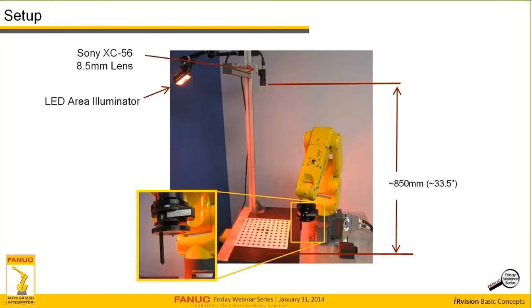Here's our setup in the FANUC conference room. I'm working with a Sony XC56, which is the standard resolution FANUC camera, using an 8.5mm lens to achieve the desired field of view at a standoff of about 850mm. I've set up a broad-area LED illuminator — not necessarily optimal for your application, but it will work for our demo. We're using a LRMate 200ID4S for our demo, which has an FS15IA force sensor on the end, though we're not using that as part of the demo. We are doing this live, with the robot and cell right here beside me in the conference room.